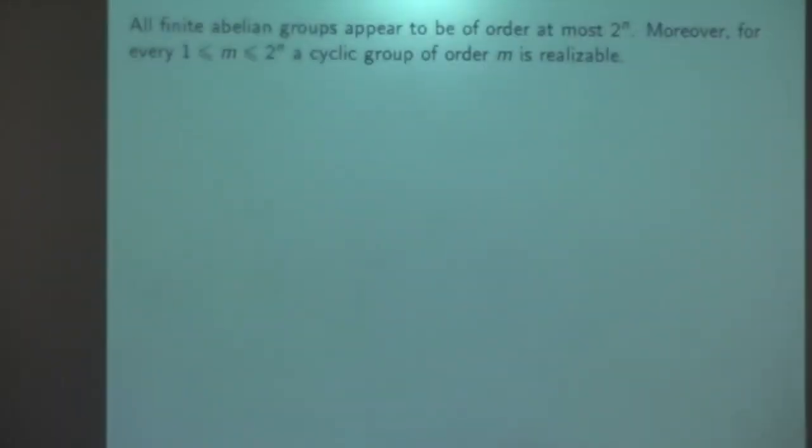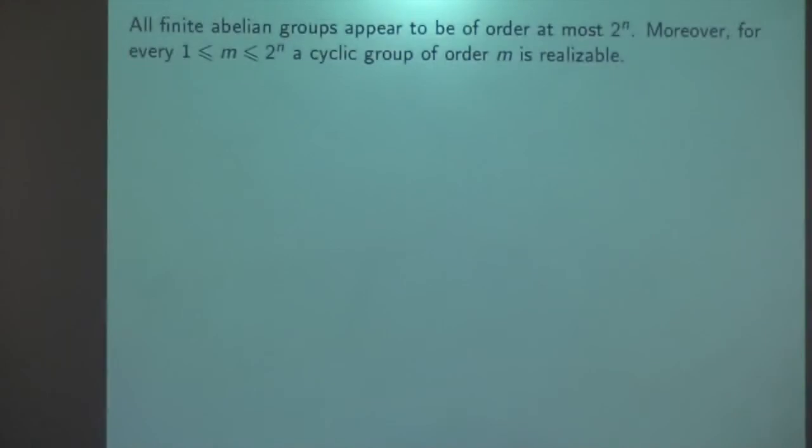For example, if n equals 3, you need to construct all possible lines from this restricted form — this is a finite algorithmic procedure — and you get a finite number of lines. You must find all proportions, which is also an algorithmic procedure, and you get the complete list of all possible abelian groups. We have proven that each finite abelian group has bounded order, and its order is close to 2 to the n small. Moreover, every cyclic group of any order between 1 and 2 to the n small is realizable.